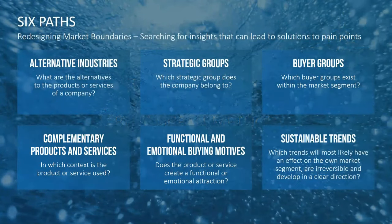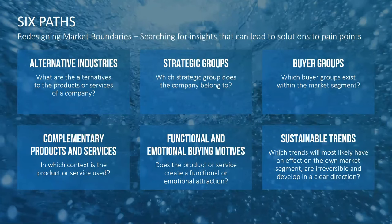We need to redesign our market boundaries and look for solutions to pain points. Once we've identified these factors of competition, where do we find new insights? There are really six paths you can take: look at alternative industries, strategic groups, buyer groups, complementary products and services, buying motives both functional and emotional, and trends — specifically sustainable trends.